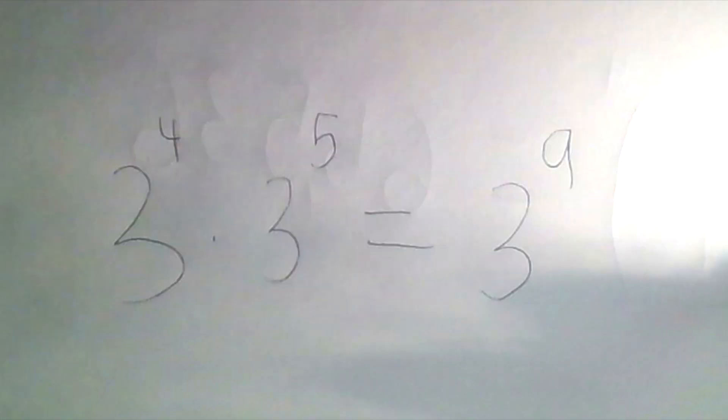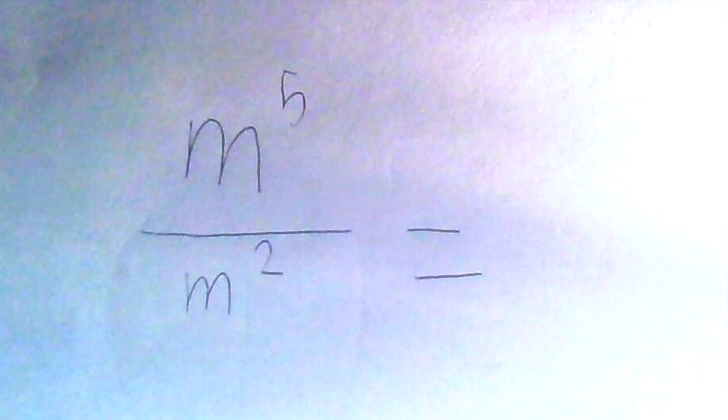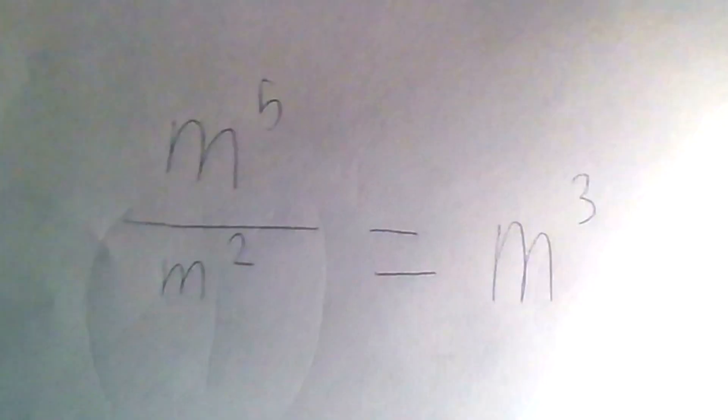Okay, now for the quotient rule. When you take a look at the quotient rule, remember this: you need to subtract the exponents, then divide the coefficients. Alright, ready for the problem? Let's go! Alright, here's the answer.